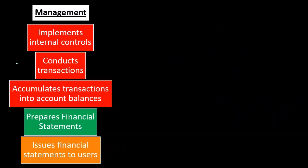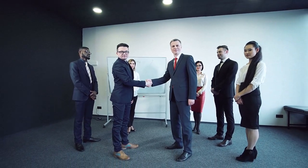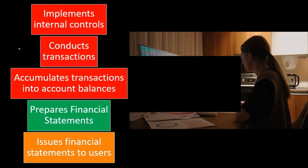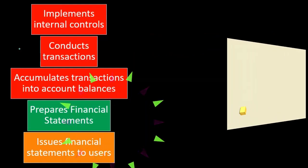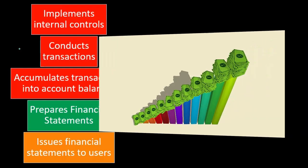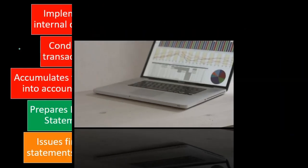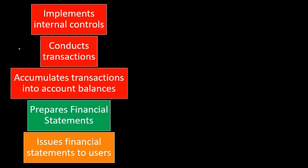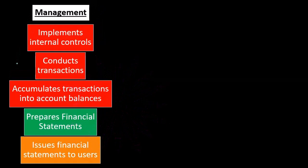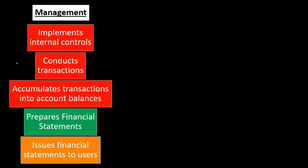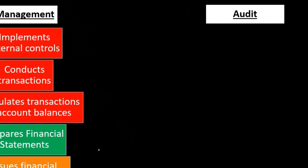The financial statements are then issued to users. For publicly traded companies, the end users are typically investors — people investing through pension plans or stock trading on public exchanges. For smaller companies, the end user may more commonly be a bank that requires an audit before doing business with the company.